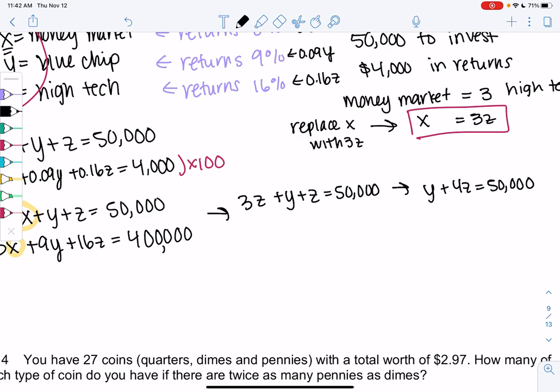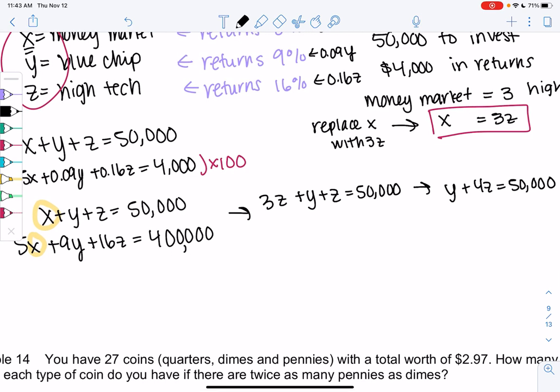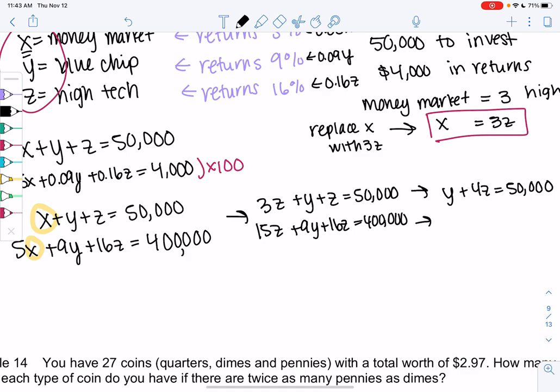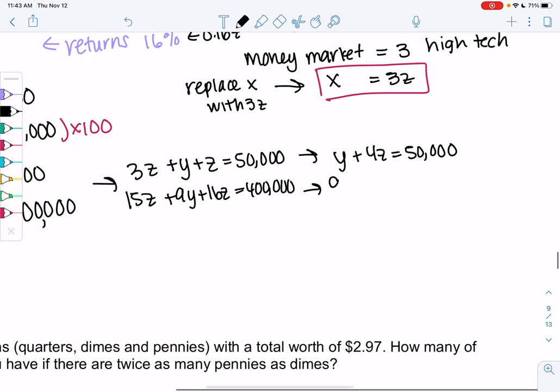Second one, we get 15, 5 times 3. 15Z plus 9Y plus 16Z is 400,000. And then we'll just combine the Zs. So 9Y plus 31Z is 400,000.